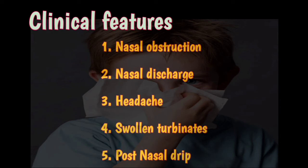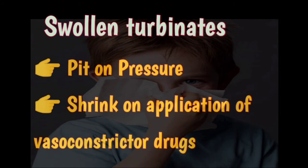On examination, the turbinates are swollen and the nasal mucosa is dull red in colour. These swollen turbinates pit on pressure and shrink with the application of vasoconstrictor drugs. This differentiates chronic simple rhinitis from chronic hypertrophic rhinitis, in which the swollen turbinates do not pit on pressure due to underlying fibrosis and do not shrink on application of vasoconstrictor drugs. The middle turbinate may also be swollen and impinge on the septum.